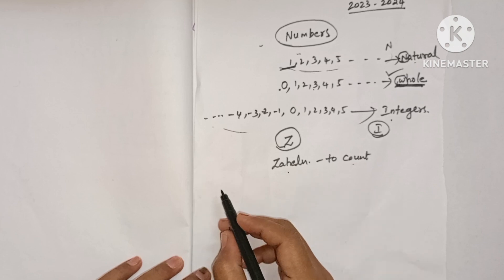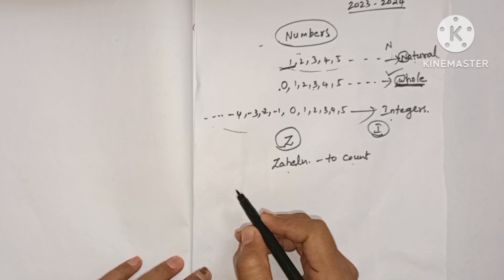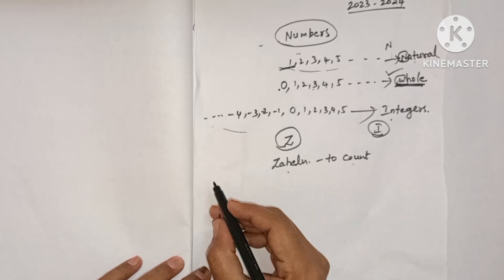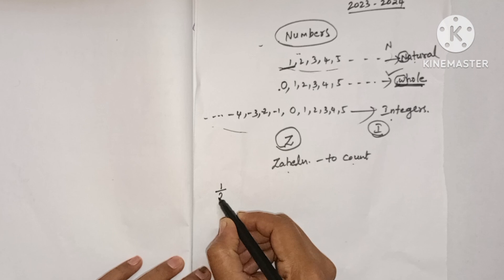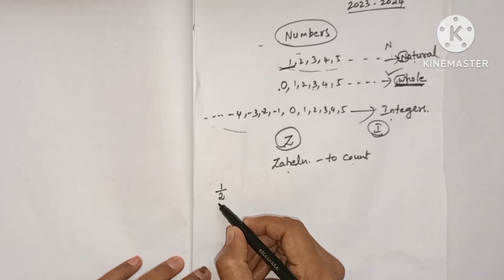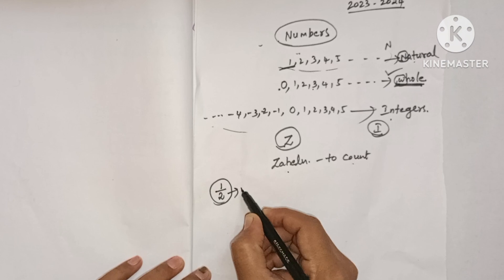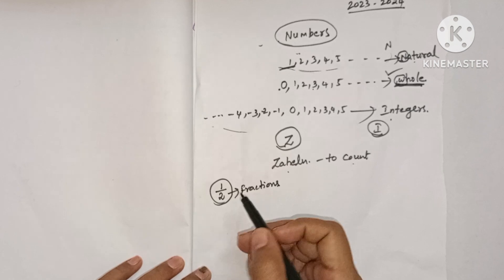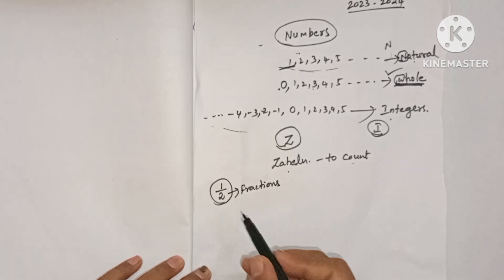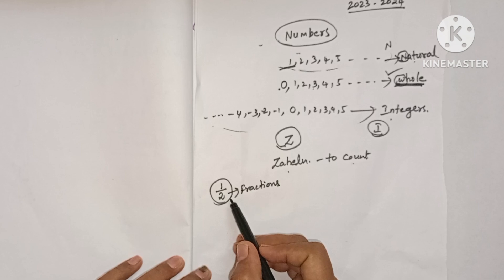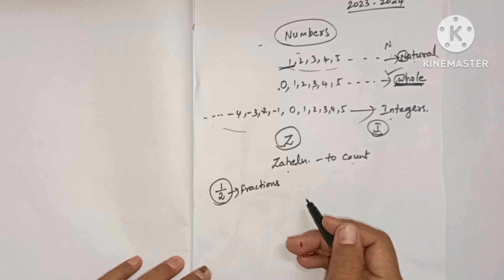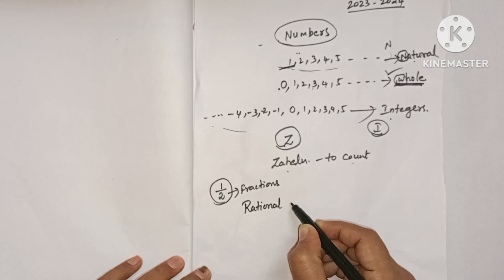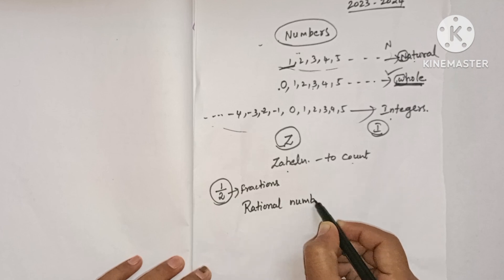There is another type of number. Suppose you share your chocolate with a friend — you give half a chocolate, which is one-half (1/2). These are fractions, which you have studied in lower classes. Numbers which are fractions have a special name: rational numbers.